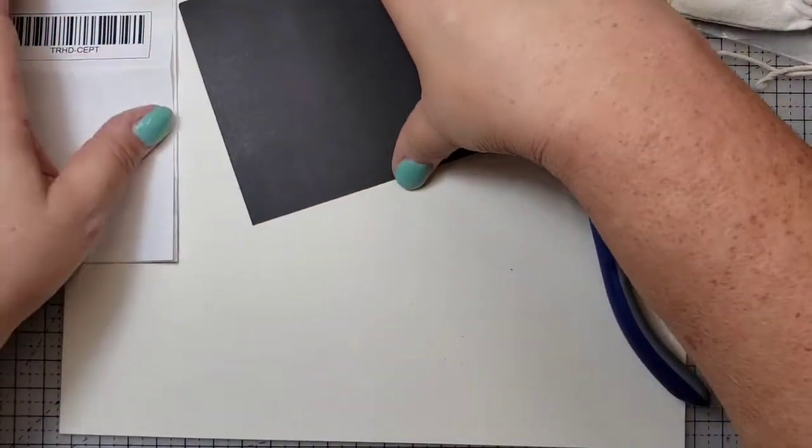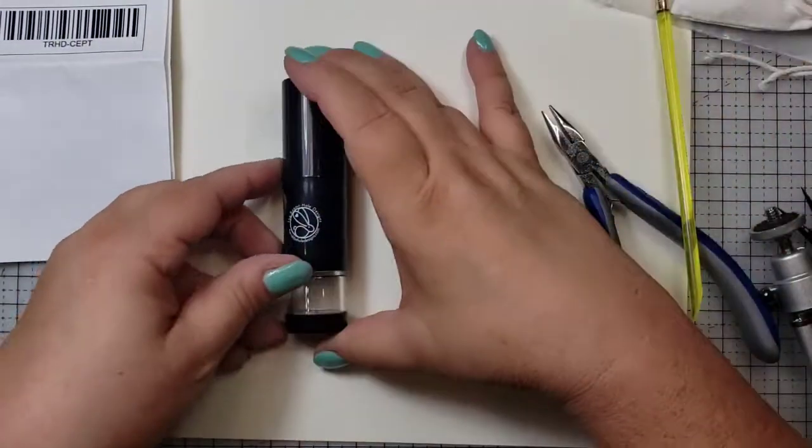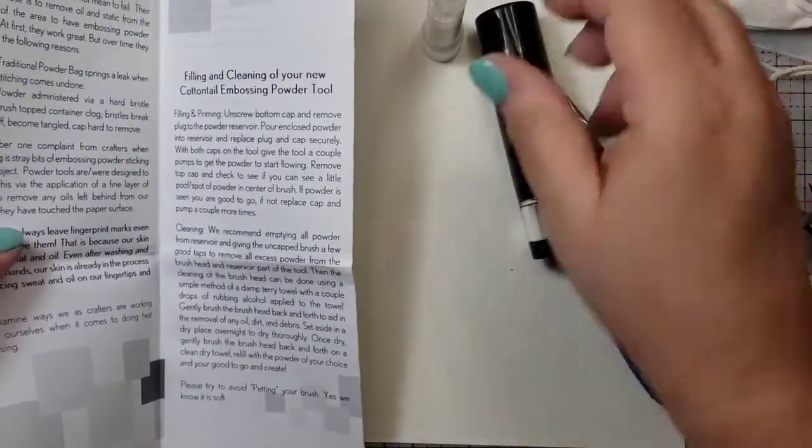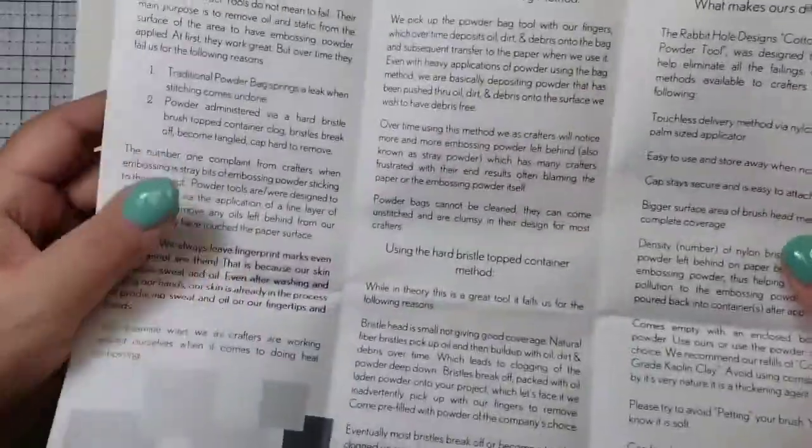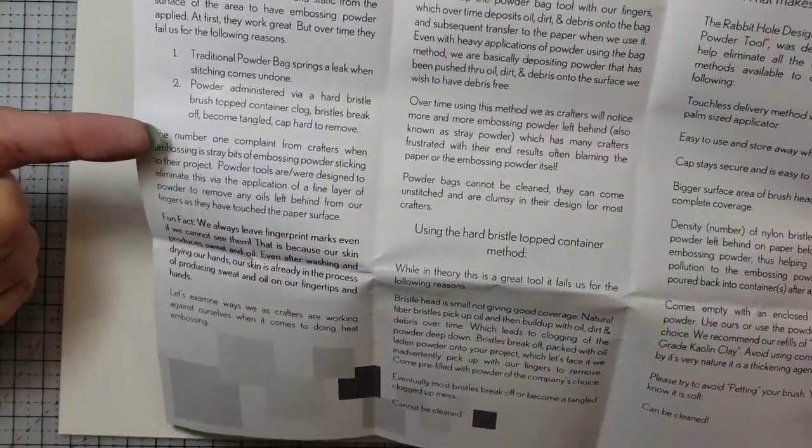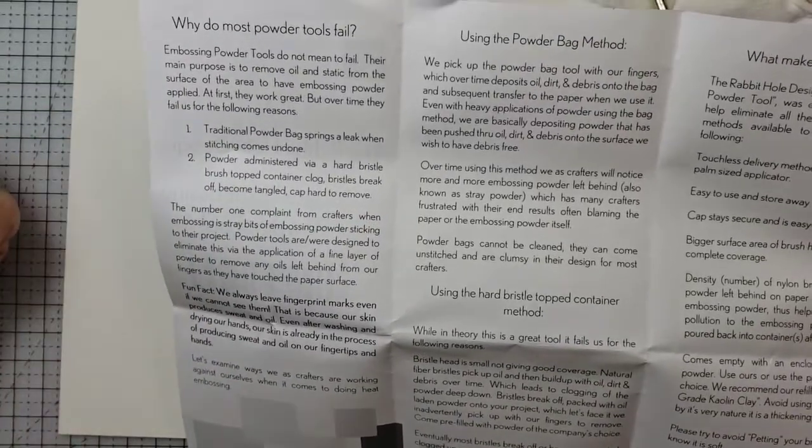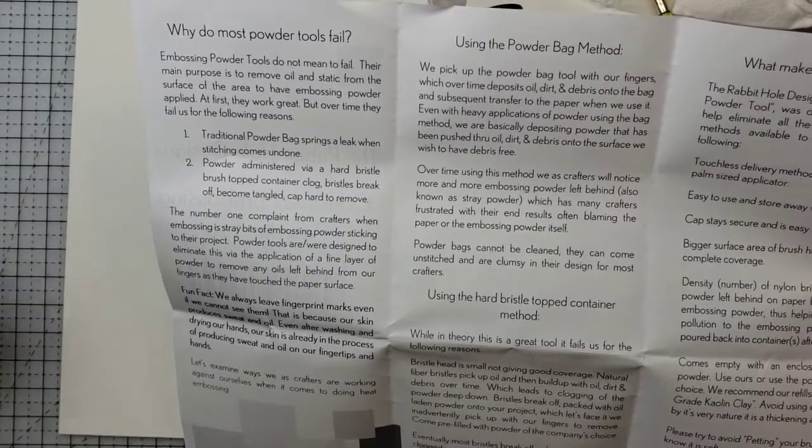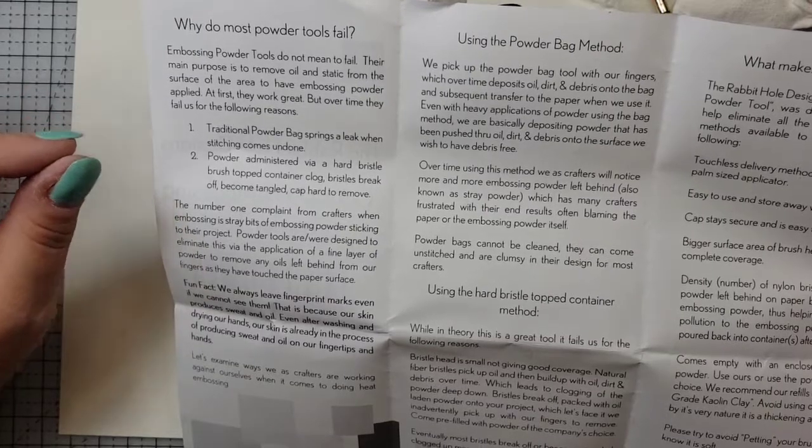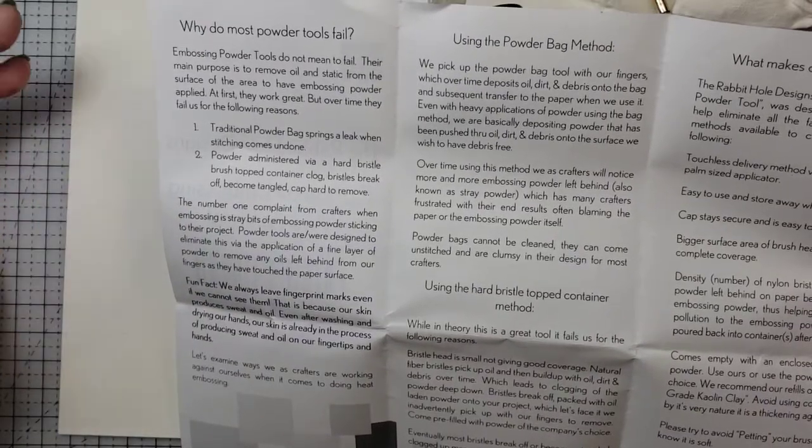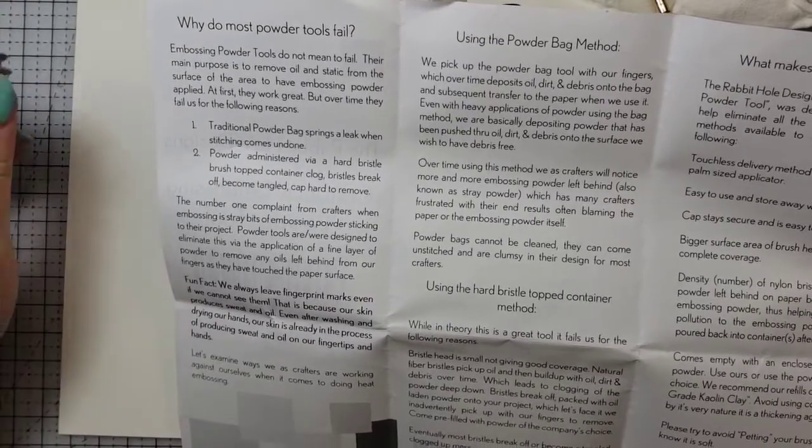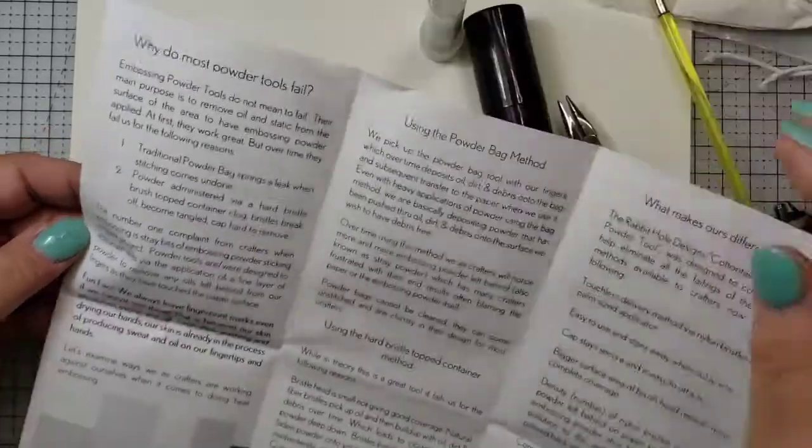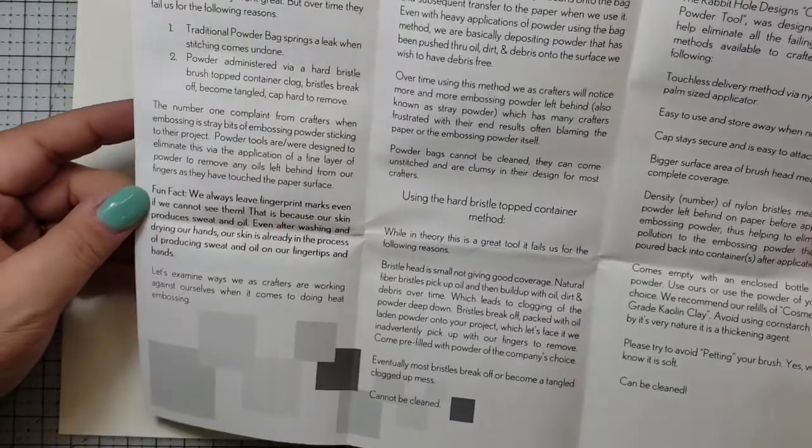Let me go ahead and bring out the embossing tool again for the Rabbit Hole Design Cottontail embossing tool. And we'll take a look here a little bit closer at these instructions. So again, I was going over some of the reasons why most of the powder tools fail us. It talks about it right here. Traditional bags spring leaks, the stitching comes undone. And then there's some of the powder administrators that are really fine bristle points at the tip, but those are also hard bristle points. And so they tend to become tangled in the cap. They might break off. So I think they say the number one complaint that crafters have is that you've got stray powder all over your project. And that's not what we want to do.